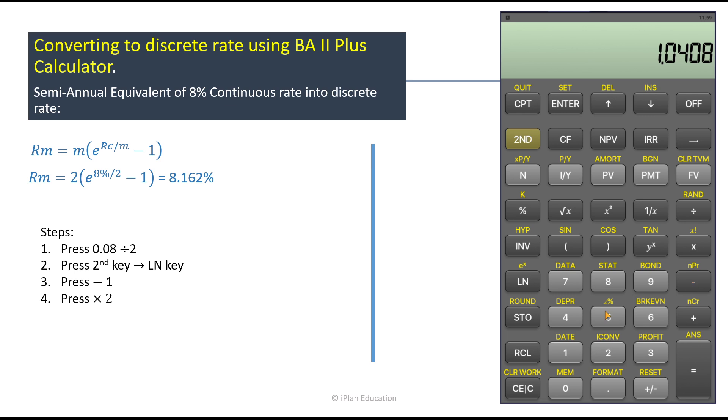Okay, so we get only the interest rate now, and now we multiply it with 2. Okay, and you get the discrete rate that is 0.0816.